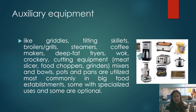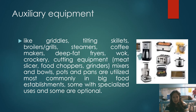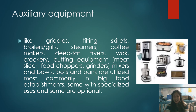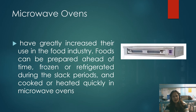Auxiliary equipment like griddles, tilting skillets, broilers, grills, steamers, coffee makers, deep fat fryers, woks, crockery, cutting equipment, meat slicers, food choppers, blenders, mixers, bowls, pots, and pans are utilized most commonly in big food establishments. Some have specialized uses and some are optional. In a restaurant kitchen, this auxiliary equipment is usually complete since they are a large food establishment.